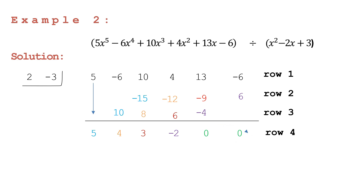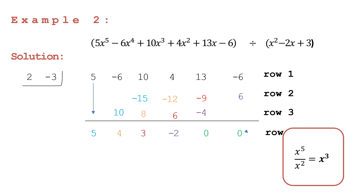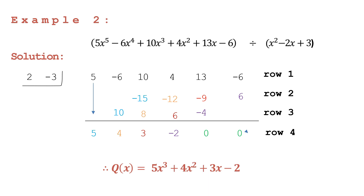Let's write our quotient. x raised to the 5th divided by x squared is equal to x cubed. We begin with x cubed together with the numerical coefficients, writing our quotient as: 5x cubed plus 4x squared plus 3x minus 2. That is the final answer.